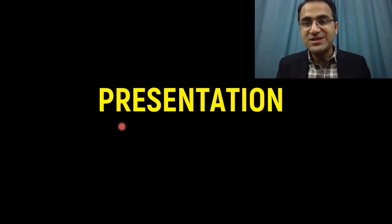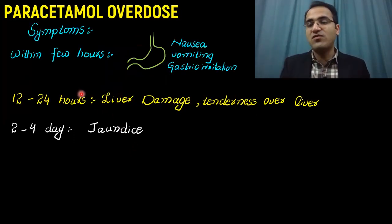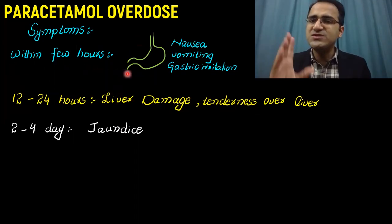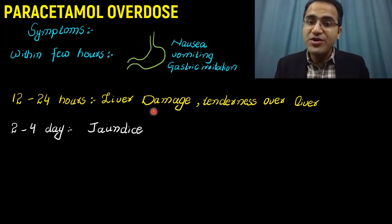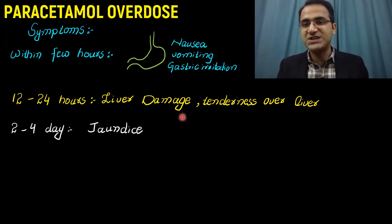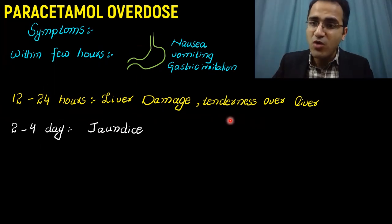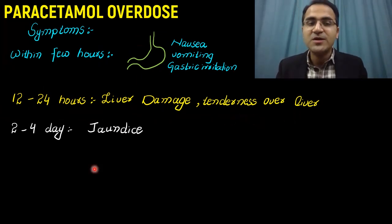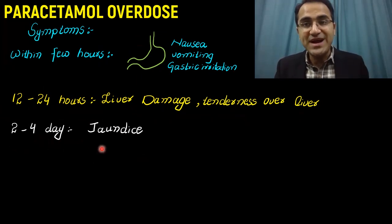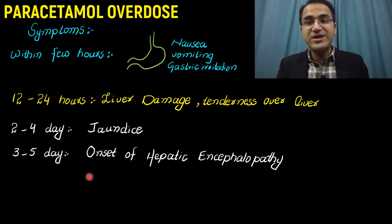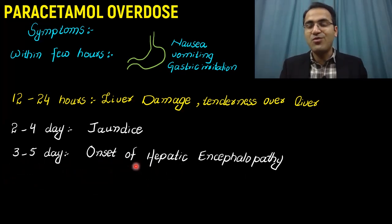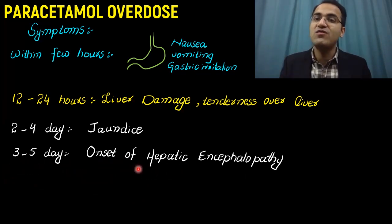Presentation of a patient with paracetamol overdose is dependent on the time of ingestion. Within a few hours, paracetamol reaches the stomach and gastric irritation results in nausea and vomiting. In 12 to 14 hours, liver damage will ensue and the patient will feel tenderness in the right upper quadrant of the abdomen. On the second or fourth day, the patient might develop jaundice. Between the third and fifth day, hepatic encephalopathy may develop due to liver damage and accumulation of toxic substances.